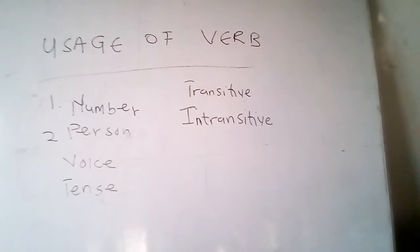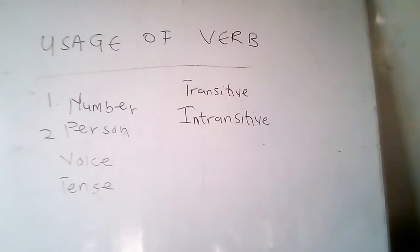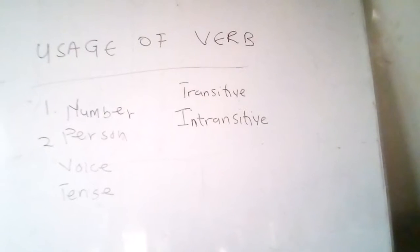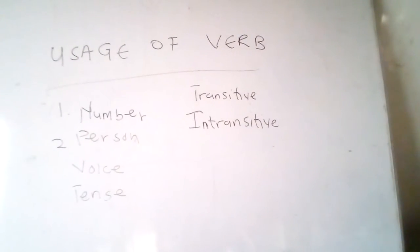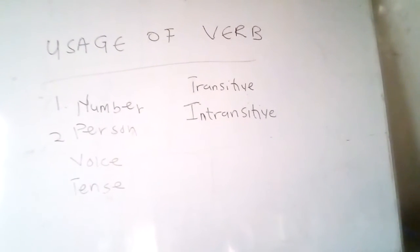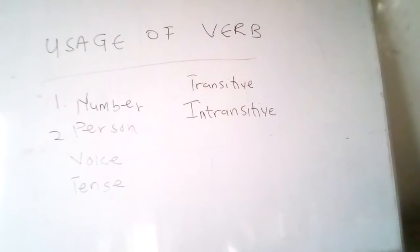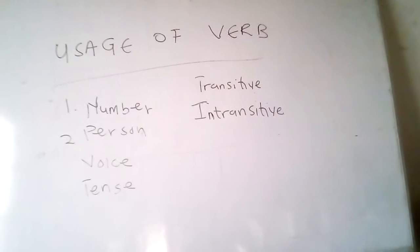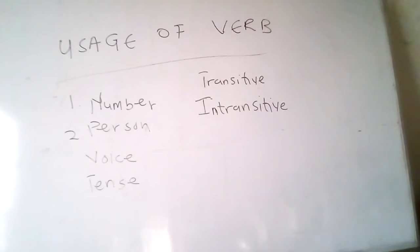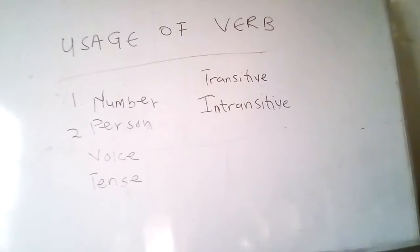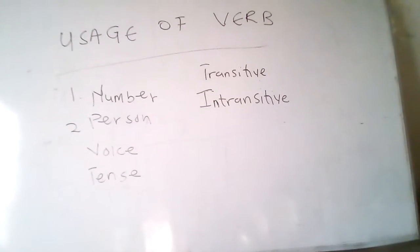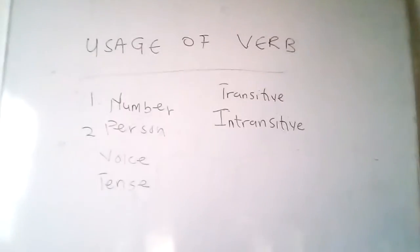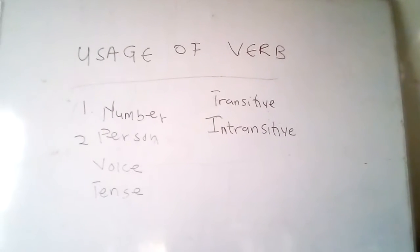Number indicates whether a verb is singular — only one — or plural — more than one. The verb and its subject must both be singular or both be plural. For example: 'Ruth likes mangoes' — 'Ruth', only one, matches the singular verb 'likes'. And 'The girls like mangoes' — 'the girls', plural, matches the plural verb 'like'.